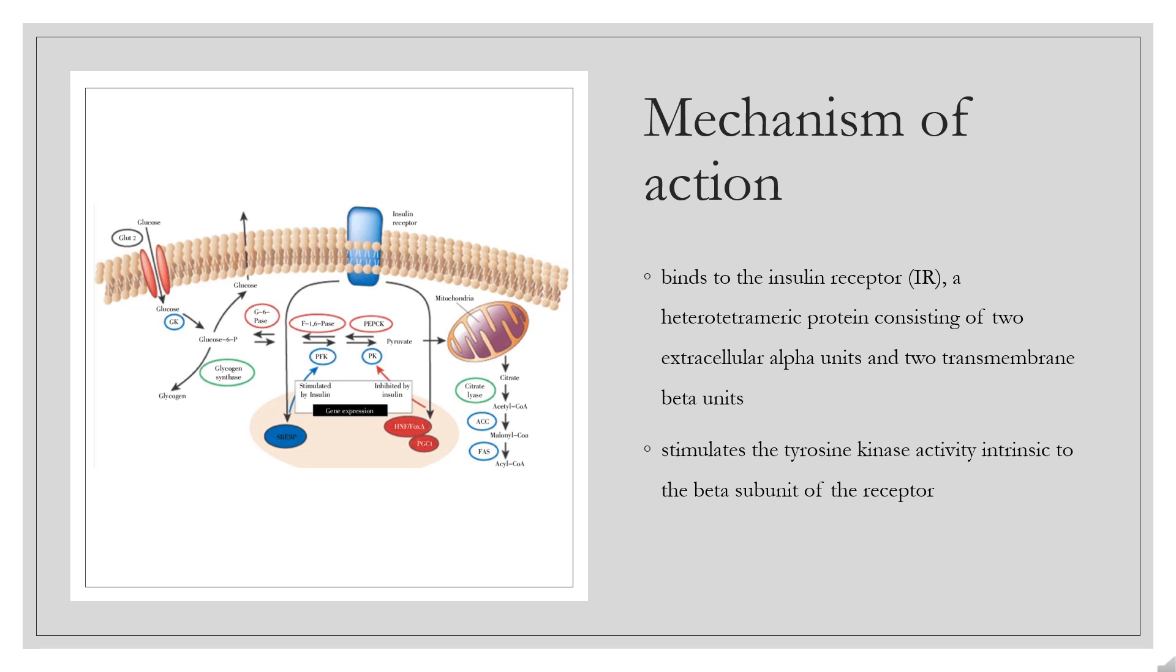In humans, insulin is stored in the form of hexamers. However, only insulin monomers are able to interact. Our substitution of the proline residue at B28 with aspartic acid reduces the tendency to form hexamers and results in a faster rate of absorption and onset of action and shorter duration of action.